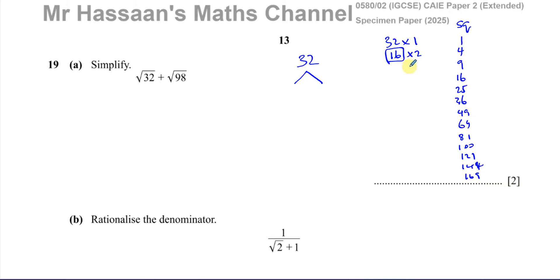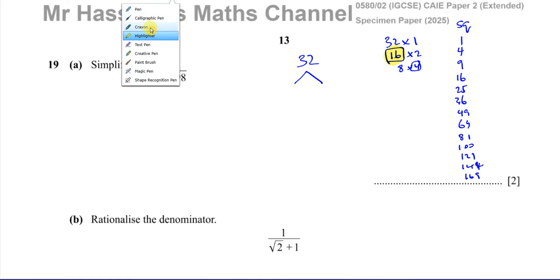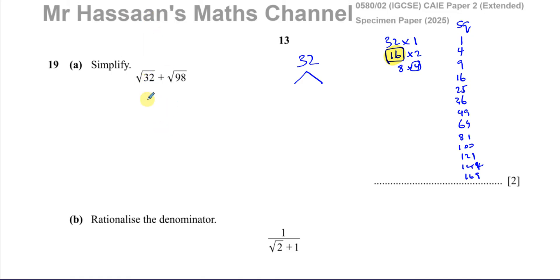We can check: 3 doesn't go into 32 as a square, 4 times 8 gives us 4 — a square number, but not the biggest. Carrying on through 5, 6, 7 — that's it. So 16 is the biggest square number in 32. I can split 32 into two parts, writing the square number first: 16 times 2.